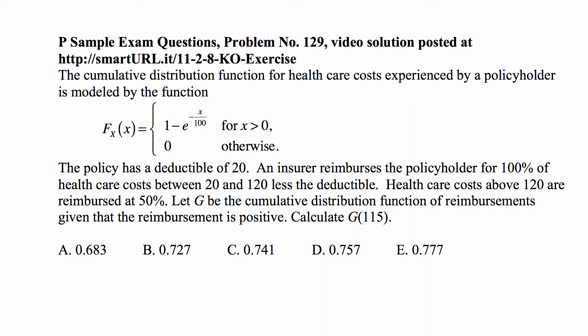The policy has a deductible of 20. An insurer reimburses the policyholder for 100% of healthcare costs between 20 and 120 less the deductible. Healthcare costs above 120 are reimbursed at 50 percent. Let g be the cumulative distribution function of reimbursements given that the reimbursement is positive. Calculate g of 115.